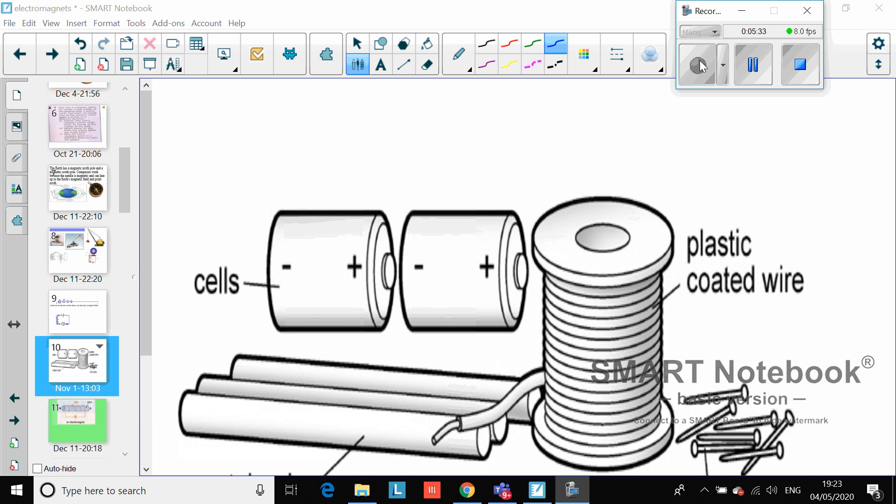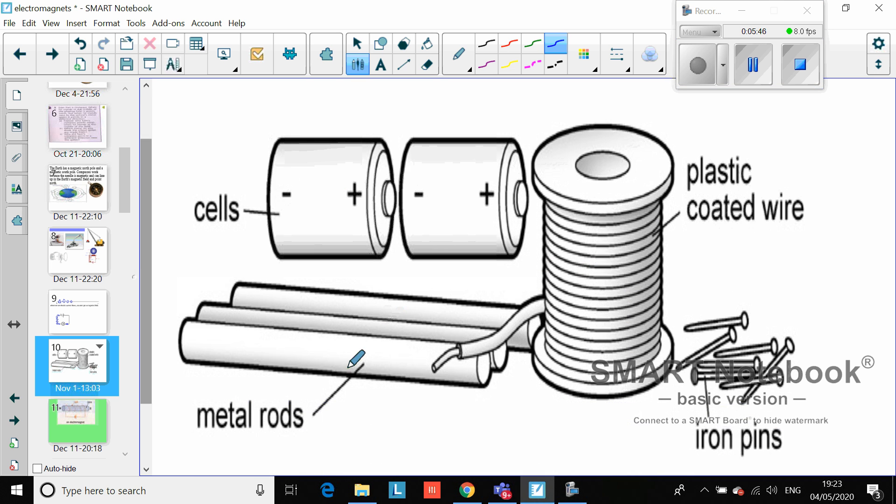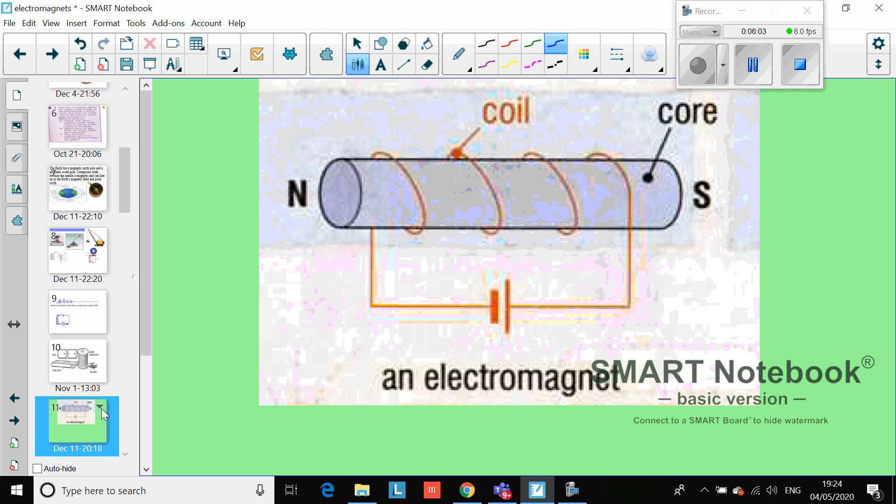Welcome back. The experiment that we were going to do was we were going to build our very own electromagnet. What we've got are a couple of batteries, some wire, and some metal rods. Think for a moment - how could you make an electromagnet from this?